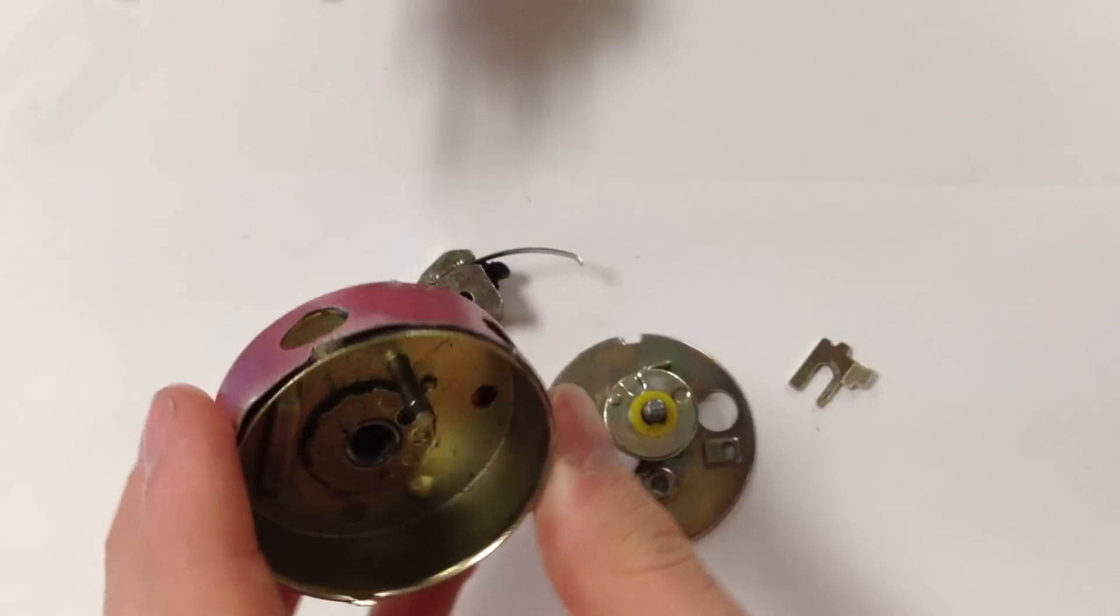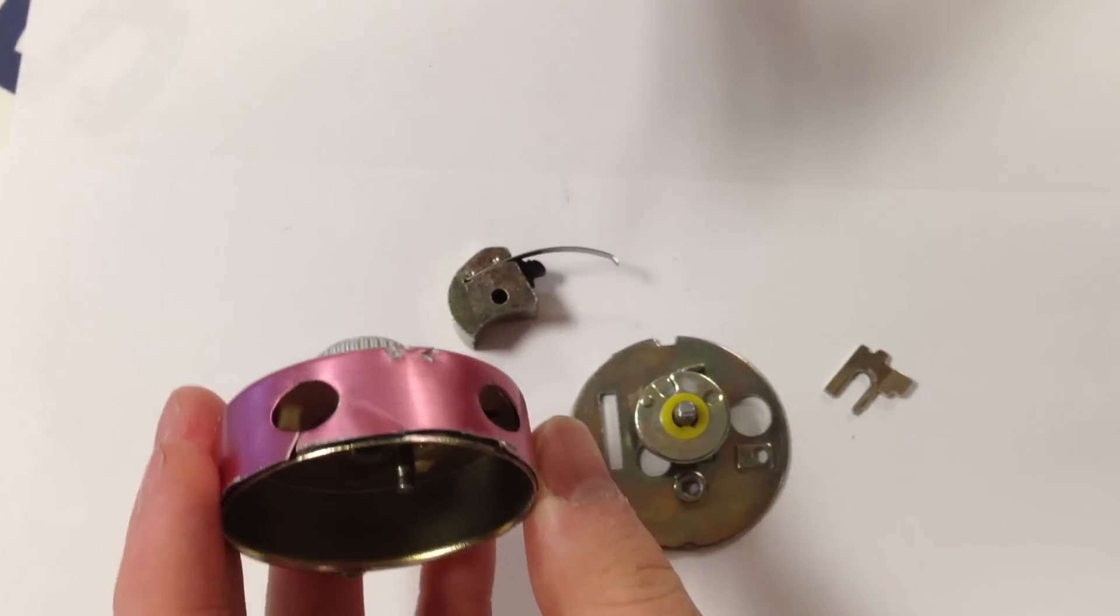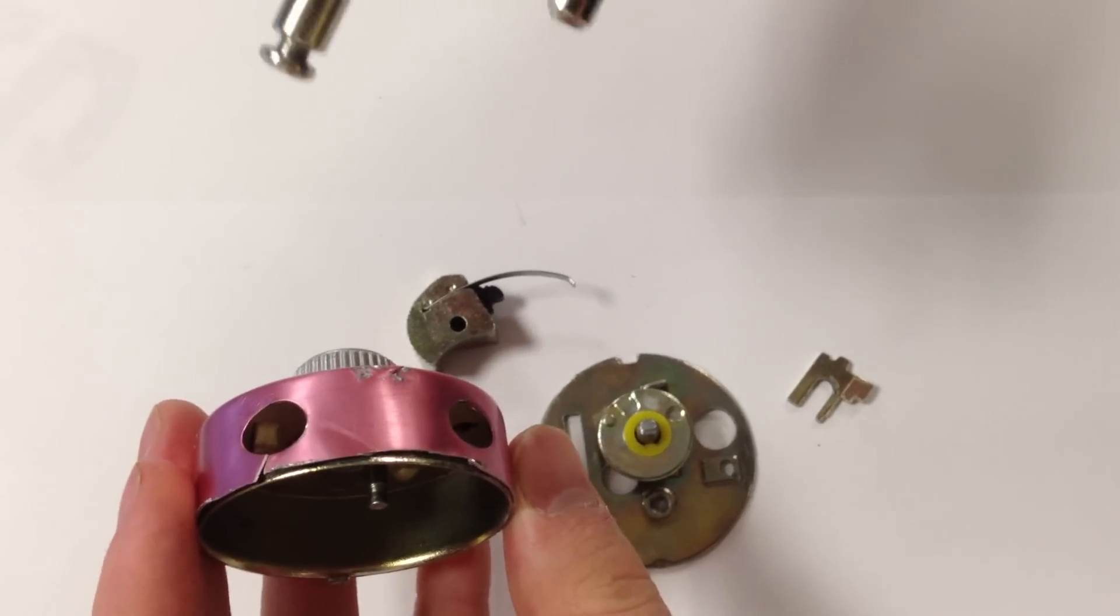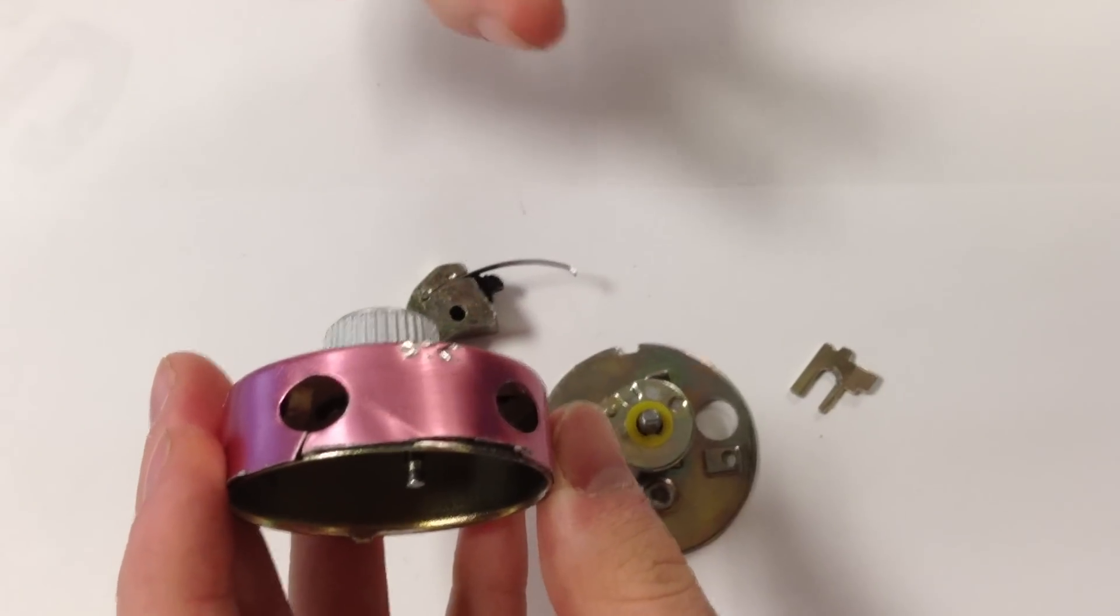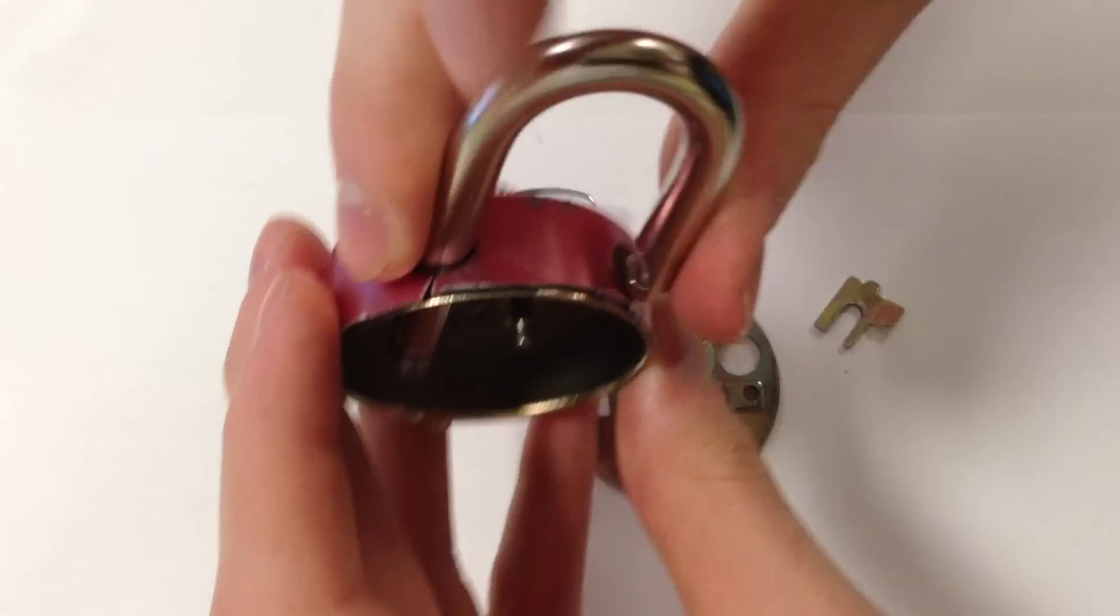In order to construct it, put it back together, first we have to take the shackle and fit it through the two holes of the outer case, obviously, like this.